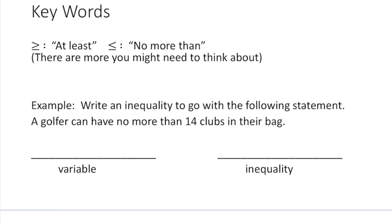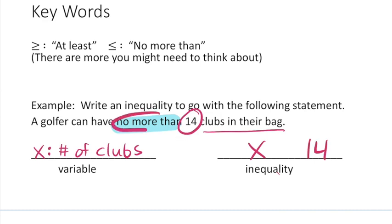In this example it says a golfer can have no more than 14 clubs in their bag. So since we're talking about clubs in their bag, I'm going to define that as my x. And then we're going to write an inequality over here. Remember we like to have x on the left of the inequality, and 14 seems like the number we're interested in, so I'm going to put that on the right. No more than means that we should have less than 14, so I'm going to put a less than symbol. And then the one thing we got to think about is should we include the boundary number?